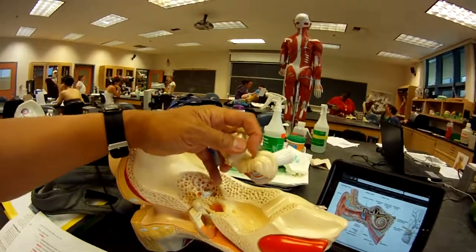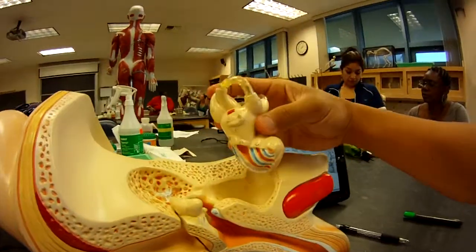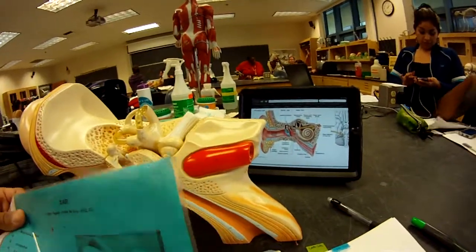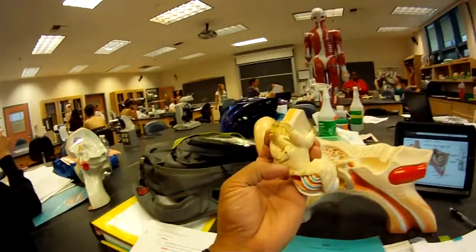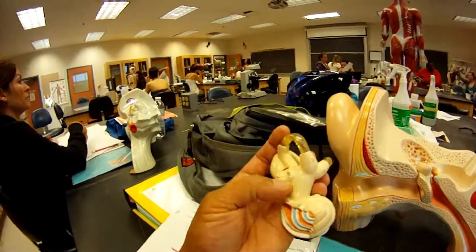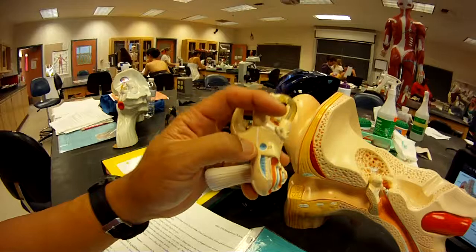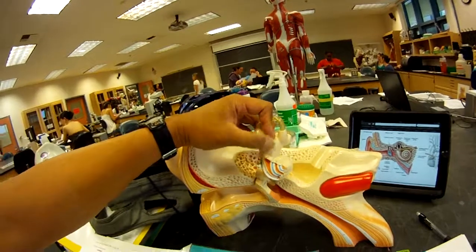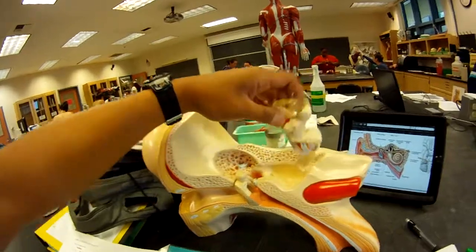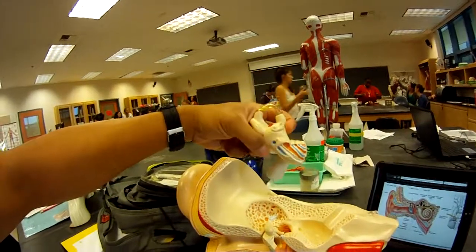The oval window - you're really not going to be able to see it, but it's right here. So this is the oval window and the round window is this. This thing is broken - I think the stapes would have been connected to this. So the stapes would have been right here at the oval window, and this is the round window.